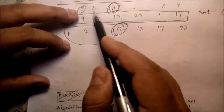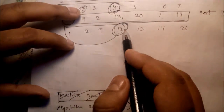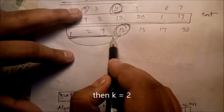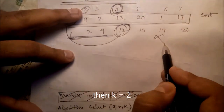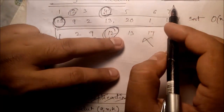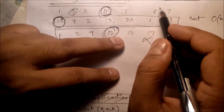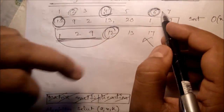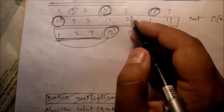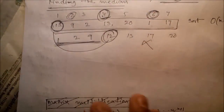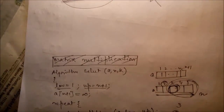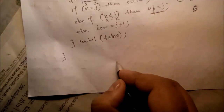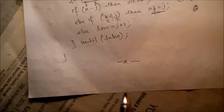This approach also extends to other percentiles. If you want the 25th percentile (2nd index) or the 80th–90th percentile, you can apply the same algorithm to only the left or right portion respectively — without sorting the whole dataset. That is the end of this video. Thank you very much.